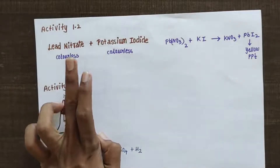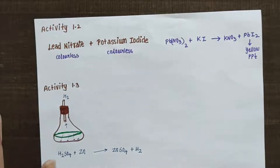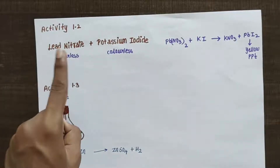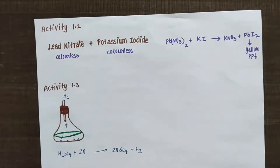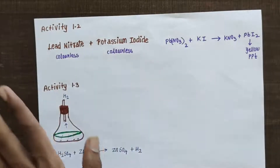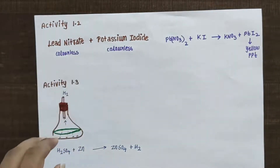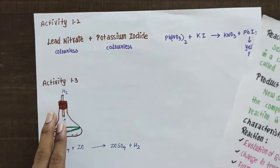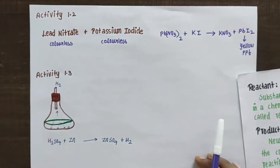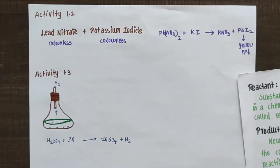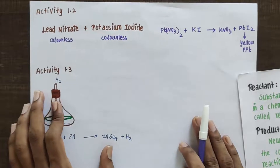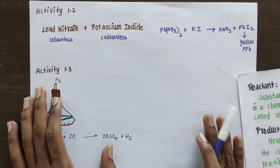What is the solution? Lead nitrate and potassium iodide. You are going to take lead nitrate in one test tube, and in another test tube you have to take potassium iodide. When you mix them both, you will be getting a yellow color substance that is settling down in the bottom of the test tube — that is what we call a precipitate.